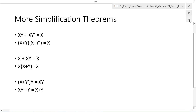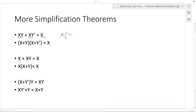Some other simplification theorems for reducing Boolean algebra equations: XY OR XY prime equals X. We factor out X using the distributive property, giving X times (Y OR Y prime). By the complementary rule, Y OR Y prime equals 1, so we have X AND 1, and by the identity theorem, X AND 1 equals X.